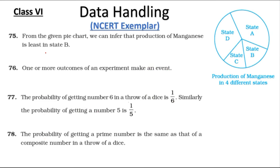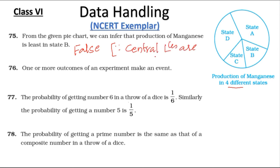Statement 75: From the given pie chart we can infer that the production of manganese is least in state B. Here the production of manganese in four different states is shown. Unless the central angle is known, we cannot determine which state has least production. So the given statement is considered false because central angle values are not given.